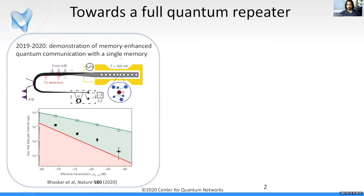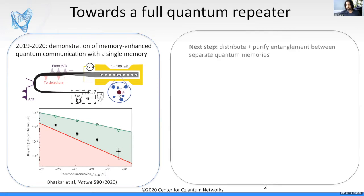But this scheme where you use just one quantum memory is not really enough to build a large-scale quantum network extending over multiple nodes and long distances. The next step is to scale this up so you can distribute entanglement between remote quantum memories, and then ideally make multiple copies of that entanglement and have local registers where you can do error correction and purification.